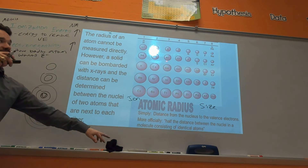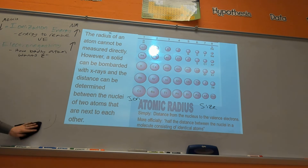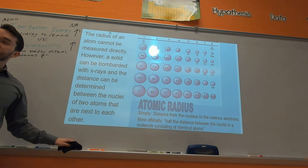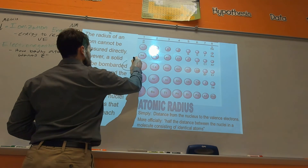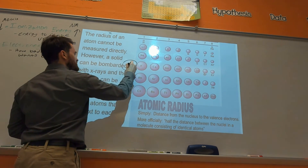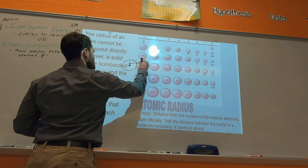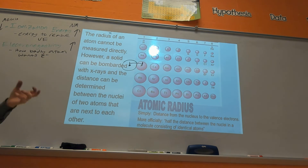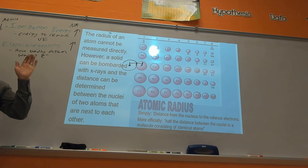What is not as obvious is that as you go from left to right across the periodic table, atoms actually get smaller. You would think adding more protons and neutrons would make the atom bigger, but it doesn't. How do scientists measure atomic size? Put two like atoms of potassium together — the nucleus is solid, so you shoot X-rays at both nuclei, get the distance between them, and that's the diameter of one atom. Divide by two and you get the atomic radius.